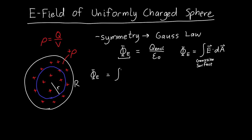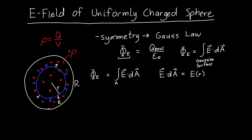The electric flux is equal to the integral of E dot dA over the Gaussian surface. The area vector dA points radially away from the center. Because of spherical symmetry, the electric field is also pointing straight out or straight in — it has no other option. So E dot dA equals the signed magnitude of E times the area element dA, and E may be a function of r.